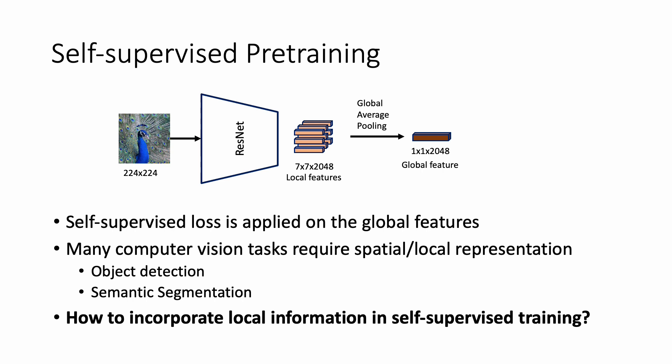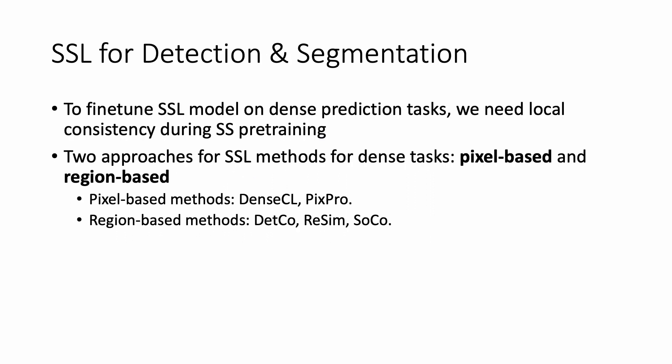Most self-supervised learning models work on this global feature representation. However, global features are suitable for tasks like image classification but sub-optimal for dense tasks like object detection or semantic segmentation. We need to use some kind of local consistency to have better pre-trained models for dense tasks. There are some works that apply self-supervised loss on local representations, and they can be divided into two methods: pixel-based and region-based.